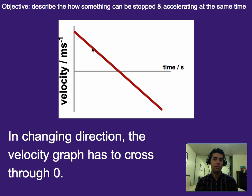Then what that means is, in order for it to change direction from positive to negative, it must go through zero at some point. And this is why something can be stopped and at the same time accelerating.